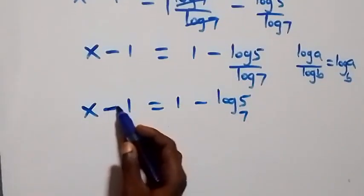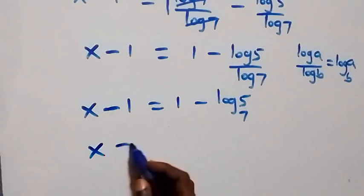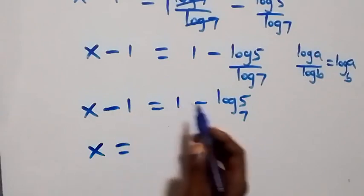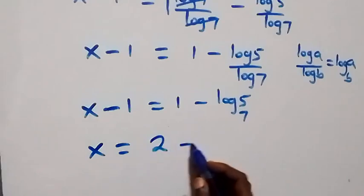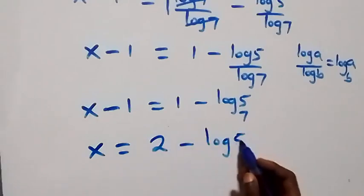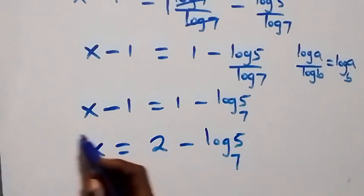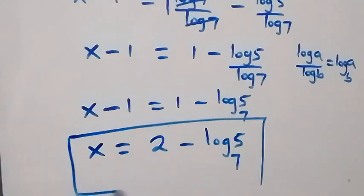Since we are finding x, we take minus one to the other side where it becomes plus one. So x equals to one plus one, which is two, minus log five to base seven. The answer to this given problem is x equals to two minus log five to base seven.